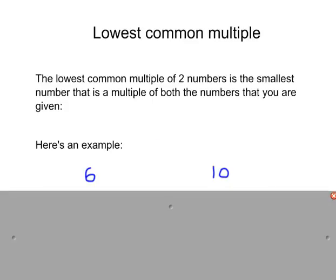A common GCSE question asks you to find the lowest common multiple of two numbers. So here's an example for you - 6 and 10.